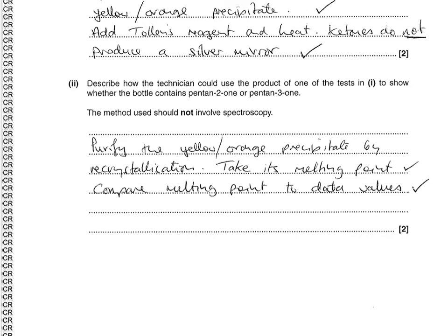You'd purify it by recrystallization. You would then take its melting point, not boiling point which is a common mistake, and then you would compare the melting point of this derivative to known data values. Those known data values would then tell you what the original ketone was - either pentan-2-one or pentan-3-one.